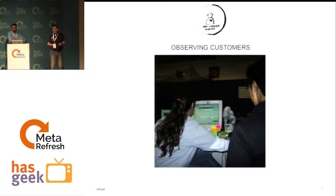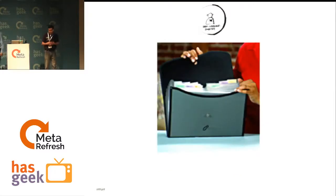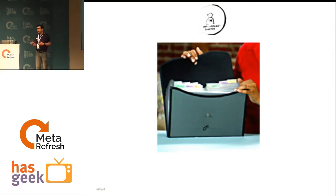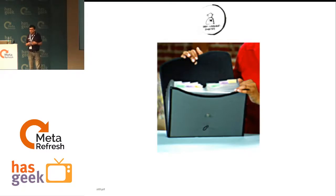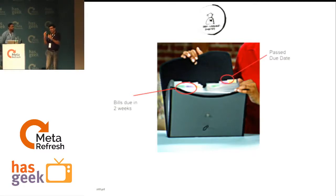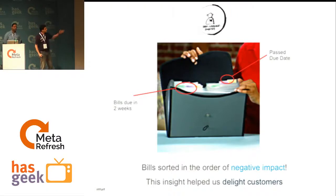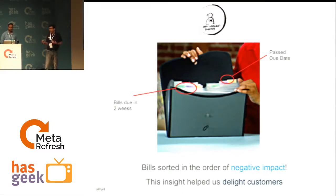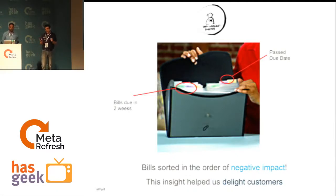Beyond talking, it's important to observe customers in their place of work. For example, we went to a customer to understand how he managed his bills. We assumed he organized them by due date, but he showed us an accordion folder where bills due in two weeks were right up front and past-due bills were behind. The credit card bills with higher interest rates were front and center. That cognitive dissonance completely changed how we approached our UX design.